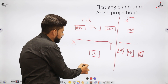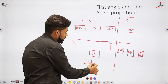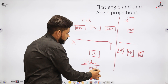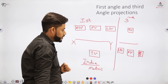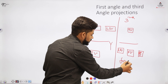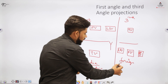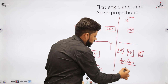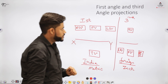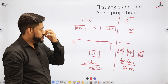In India, we follow the first angle projection system and use the metric system — that is, dimensions in millimetres. In foreign countries, they follow the third angle projection system and use the inch system. Generally, they prepare drawings in inches while we prepare drawings in the metric system.